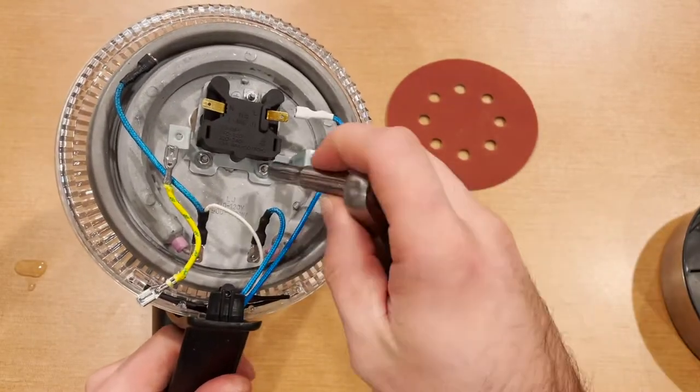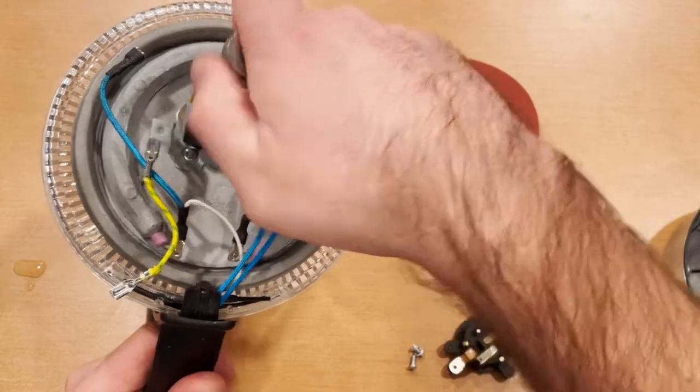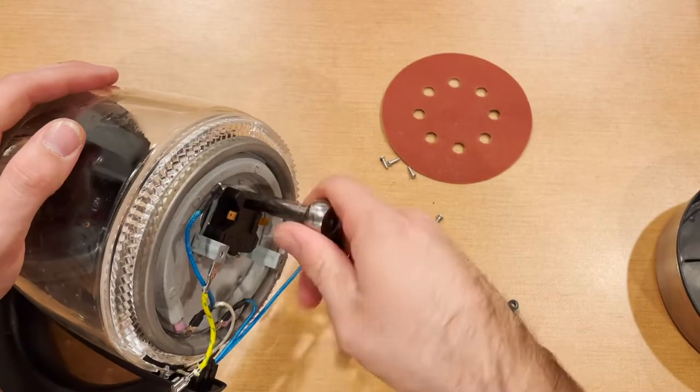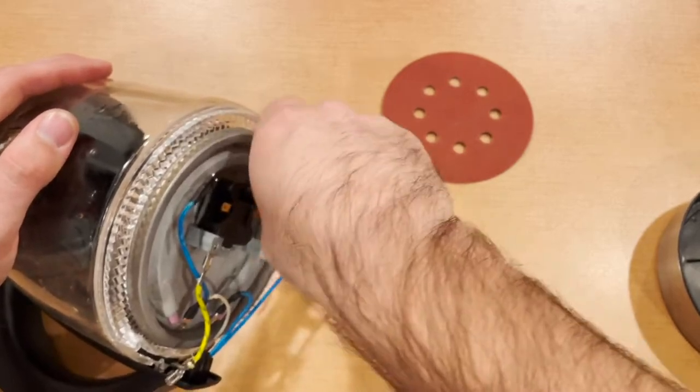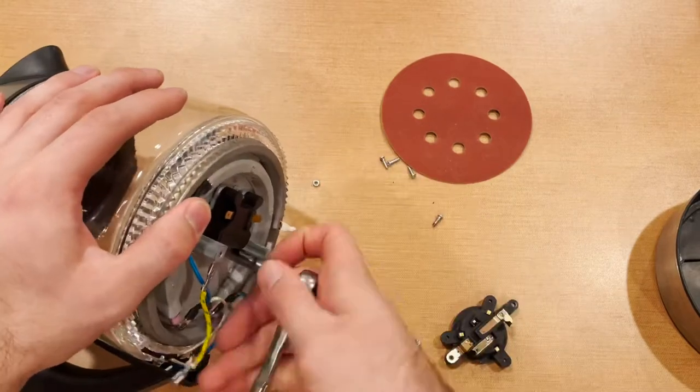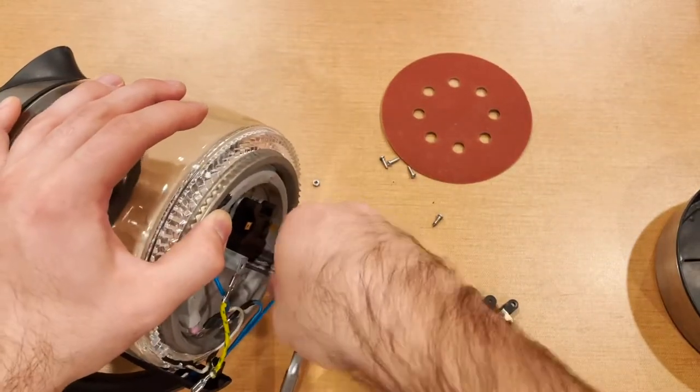So I used a 5.5 millimeter, the extended one, to get down in there and break the nuts loose. I would have to say the hardest part about this disassembly was getting down and getting those nuts loose, just because there was some clearance issues, wasn't able to get all the way down in there. So just keep that in mind when you are taking yours apart.